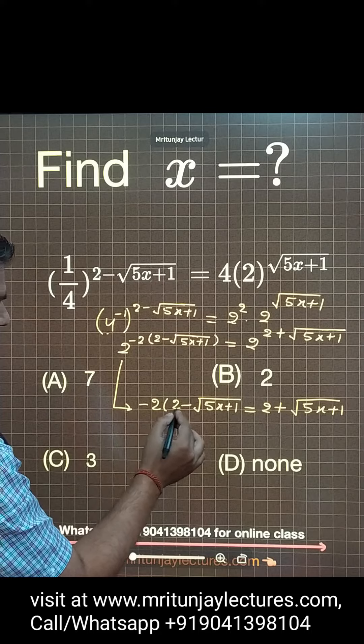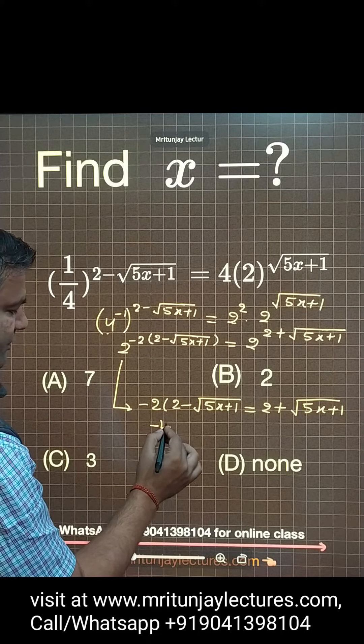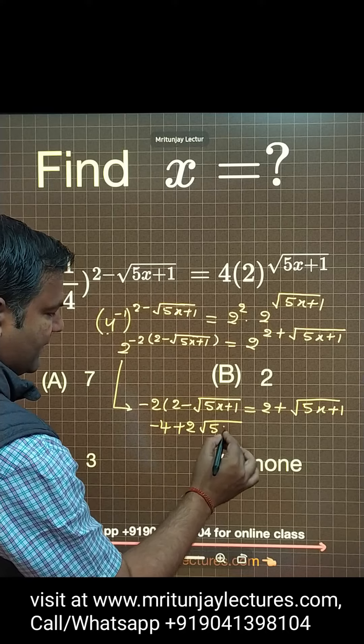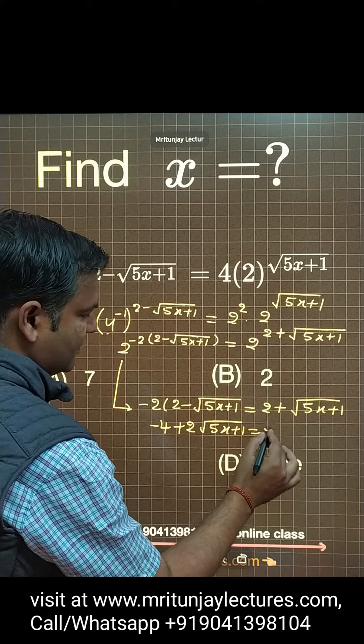Now minus 2 into 2, that is minus 4, sorry, plus 2 into 5x plus 1, this is equal to 2 plus.